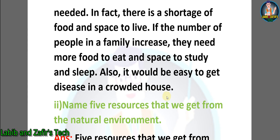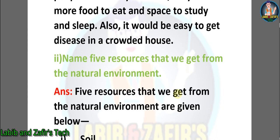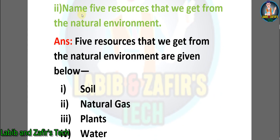Number two: name five resources that we get from the natural environment. Answer: five resources that we get from the natural environment are: number one, soil; number two, natural gas; number three, plants; number four, water; number five, animals.